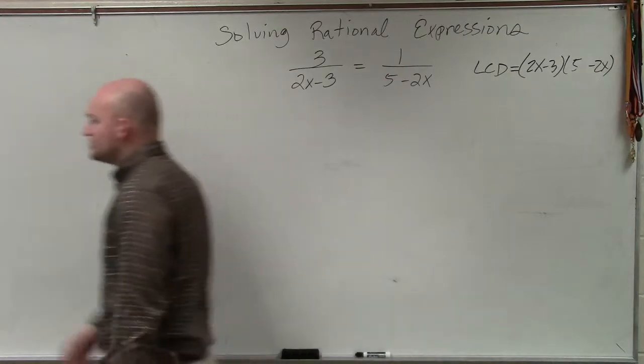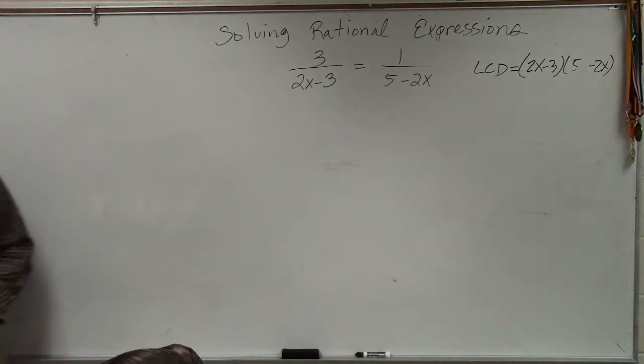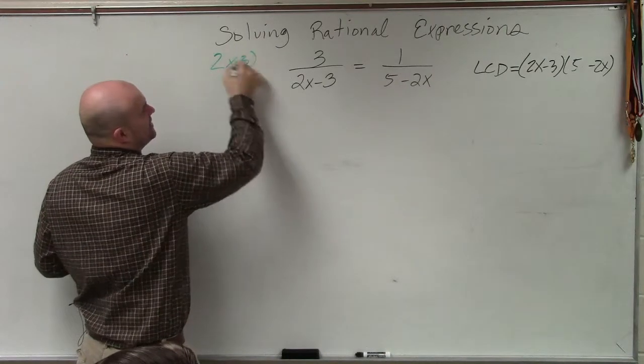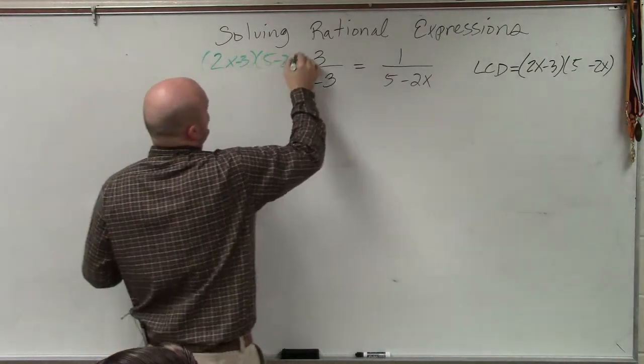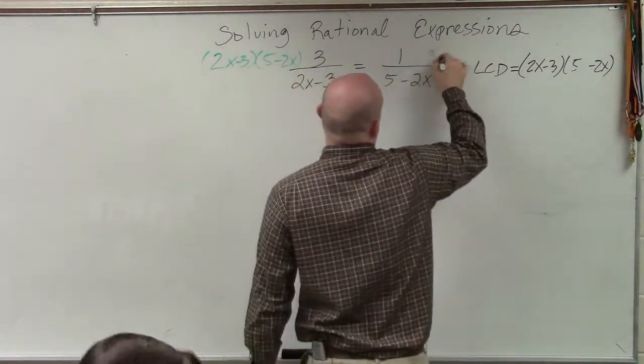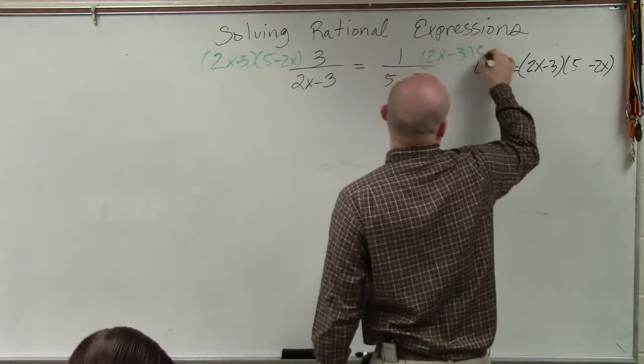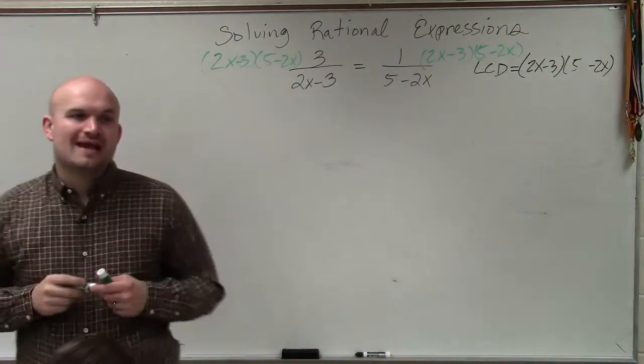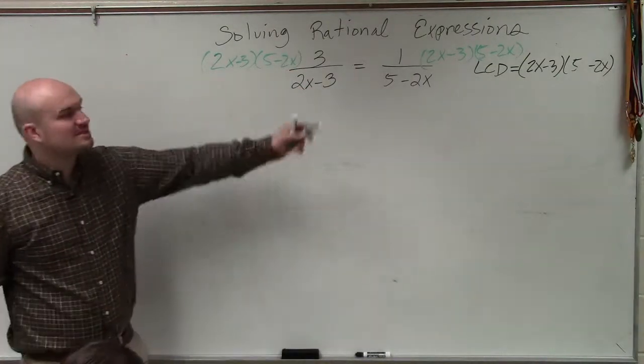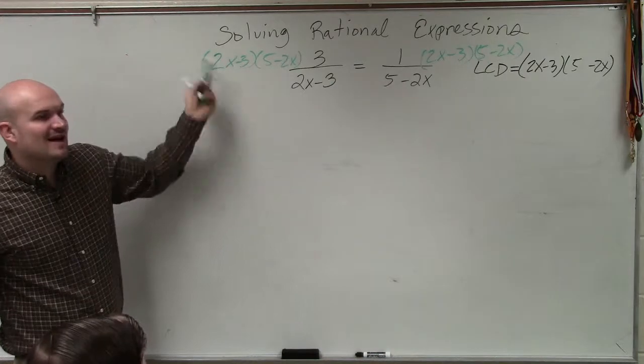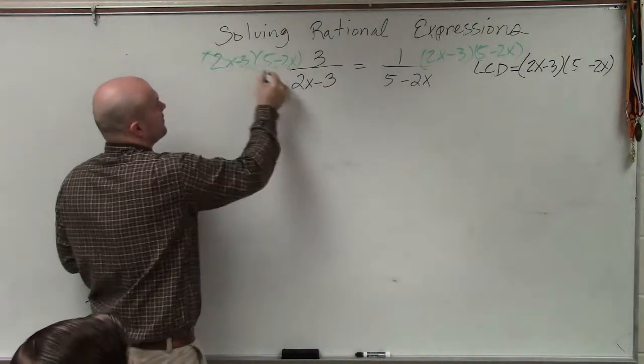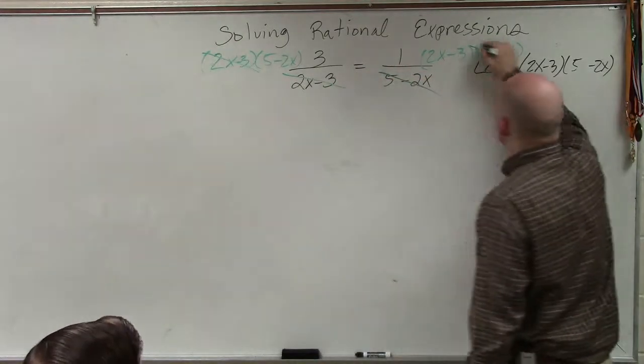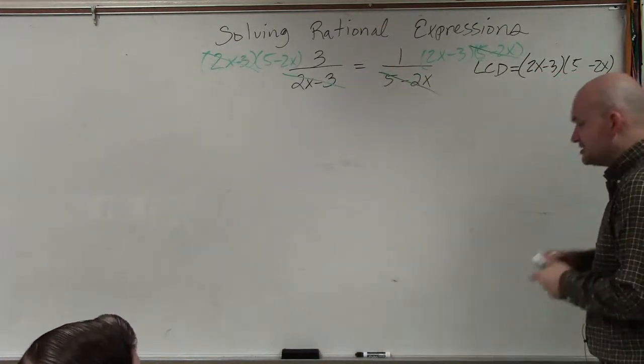Then, all we simply do is take our common denominator and we multiply it by both expressions: 2x minus 3 times 5 minus 2x on both sides. Since we multiply by the denominator, 2x minus 3 divides into our common denominator 5 minus 2x times, and 5 minus 2x divides into our common denominator 2x minus 3 times.